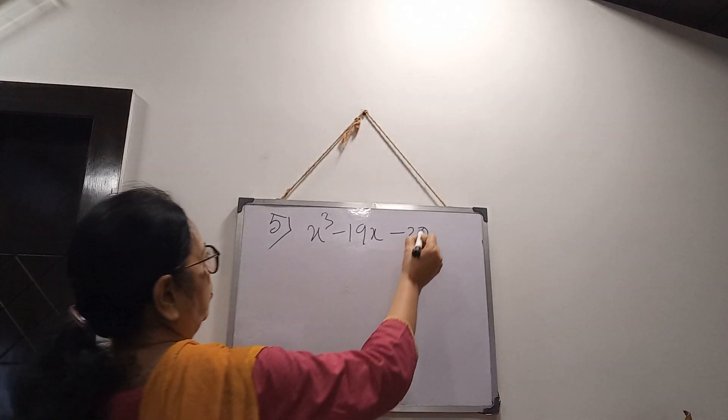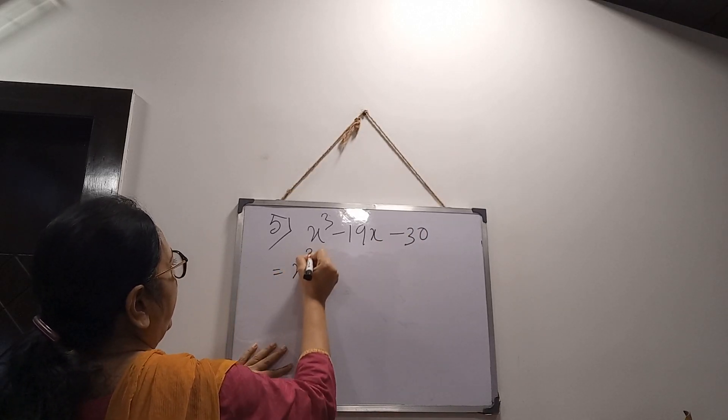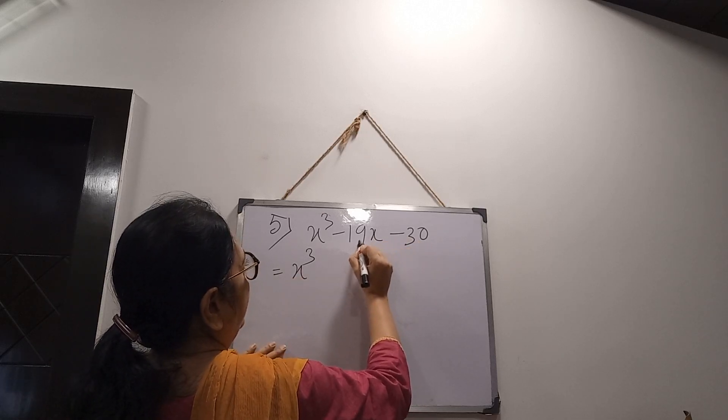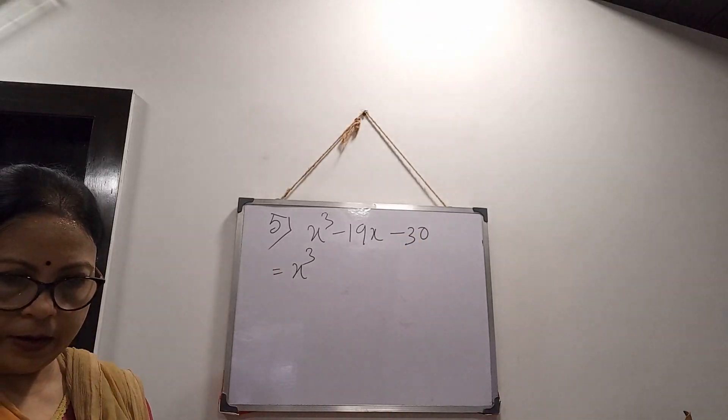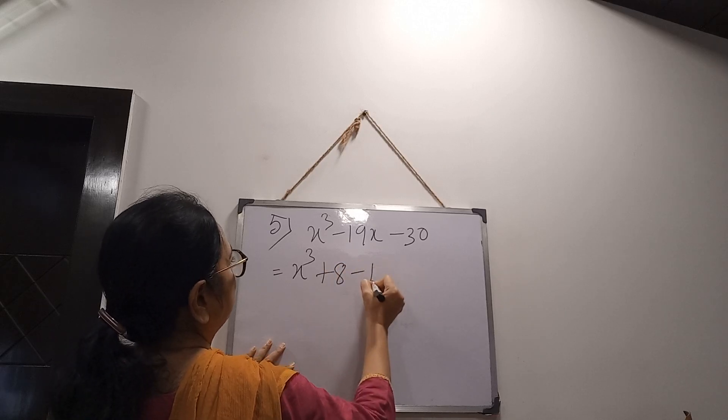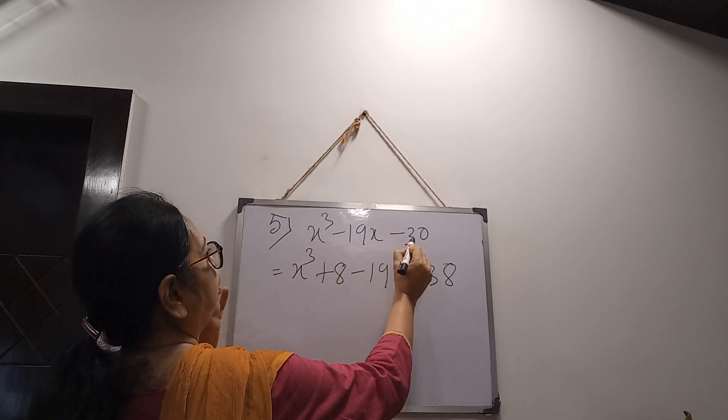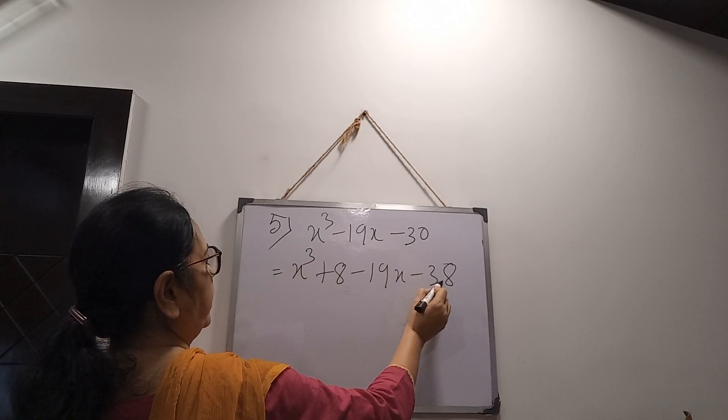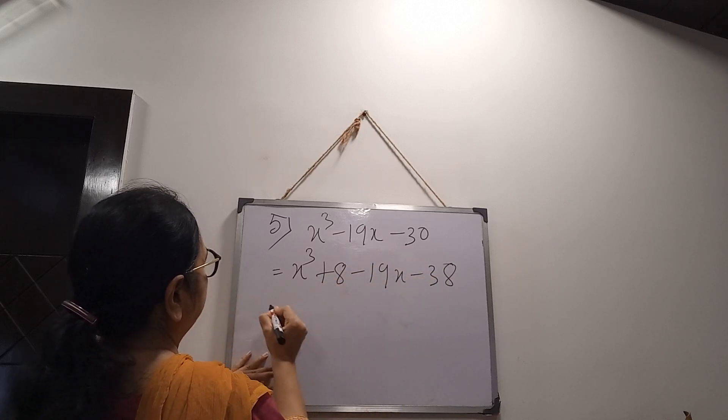We will make this as the multiple of 19. That means x³, 19, 19, 1 is 19, 2 is 38. So I am adding 8. So I have to adjust that also. Now see, there was 30, I had made 38. So I have added 8, minus 8. Now that minus 8 and here plus 8, it is adjusted.